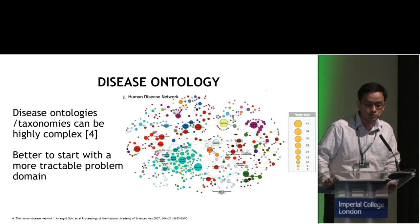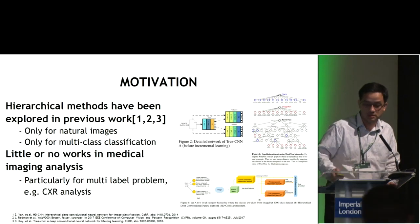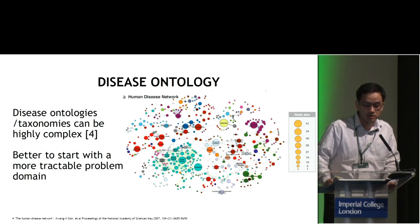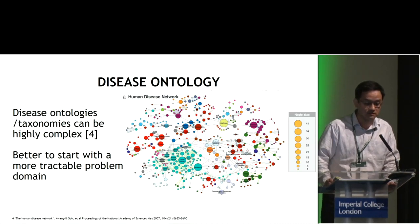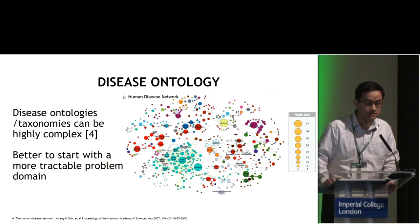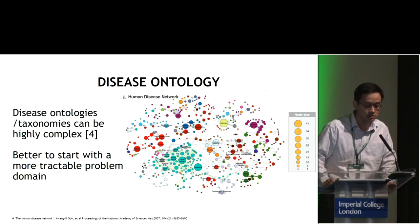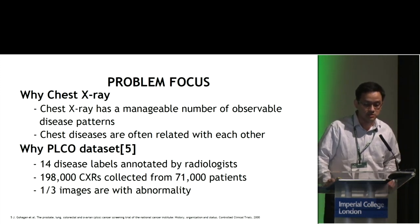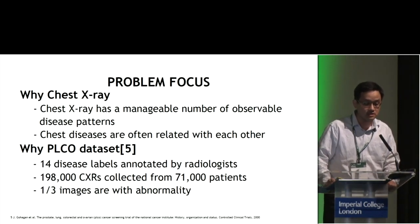For us, we are doing chest X-ray classification as a multi-label problem, because each chest X-ray may have multiple diseases existing in the image. To the best of our knowledge, there is little or no work in medical imaging analysis — and this is particularly true for the multi-label problem. This is an example of the human disease network from the literature — you can see it is very complicated.